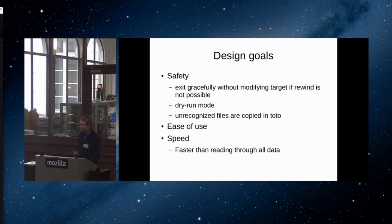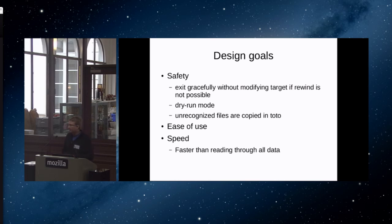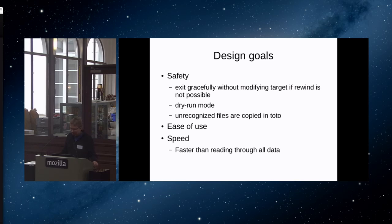I tried to make pg_rewind as easy to use as possible — only a few mandatory options, the source and the target, then just launch it. It has to be faster than just doing rsync, otherwise there's no point. If you only have very little changes to rewind, it still has to copy all the free space maps and visibility maps, which can be hundreds of megabytes for a large database. But hopefully for a large enough database it's still a lot less than copying all the data. We could make it smarter in the future, for example using checksums for files we don't recognize and only copying the diff.